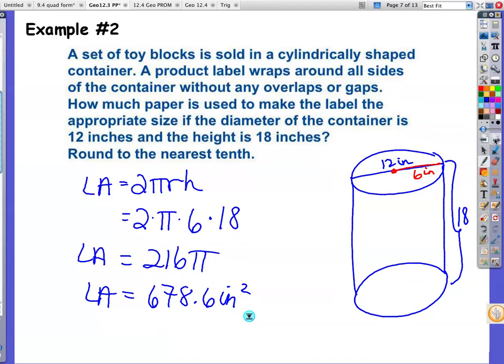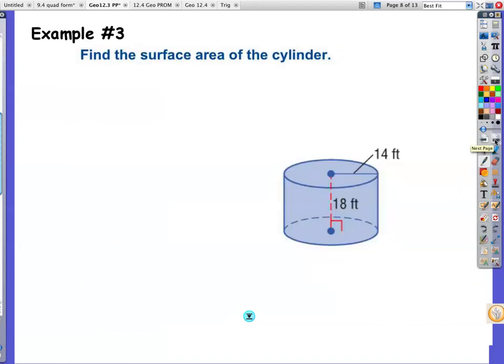Example number three. Find the surface area of the cylinder. Looks kind of familiar, doesn't it? Surface area is 2 pi RH. That is your lateral area plus the two bases that we have to add in. Our bases, remember capital B stands for the area of the base. It's not a small b. It's a capital B. Pi R squared.